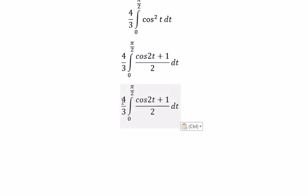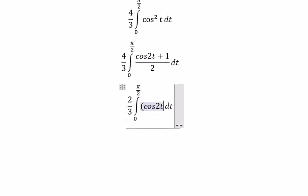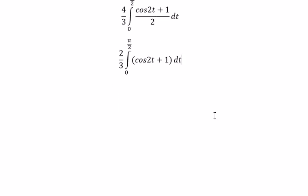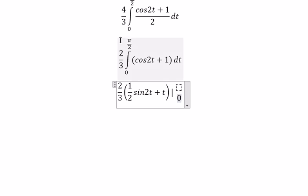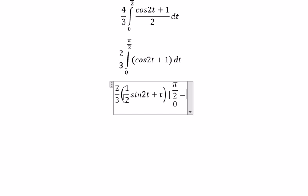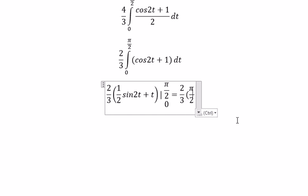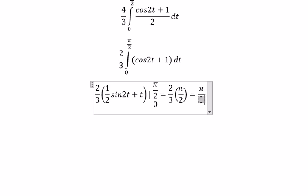So you got 2 over 3. Now, we get the final answer. We put everything in here. You got 2 over 3 multiplied with π over 2, and you got π over 3.